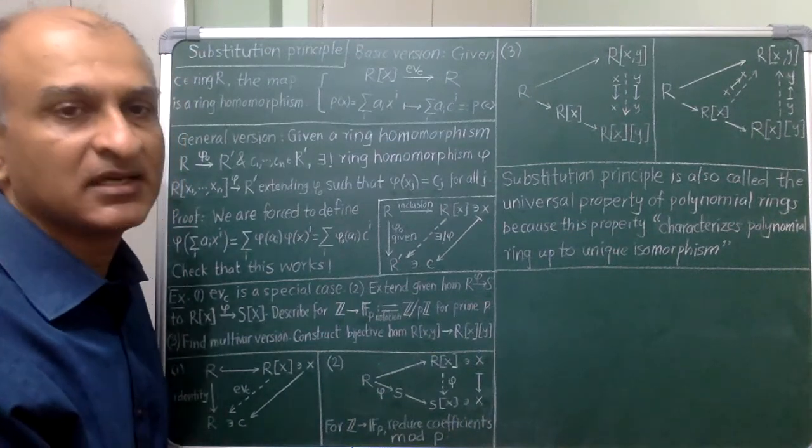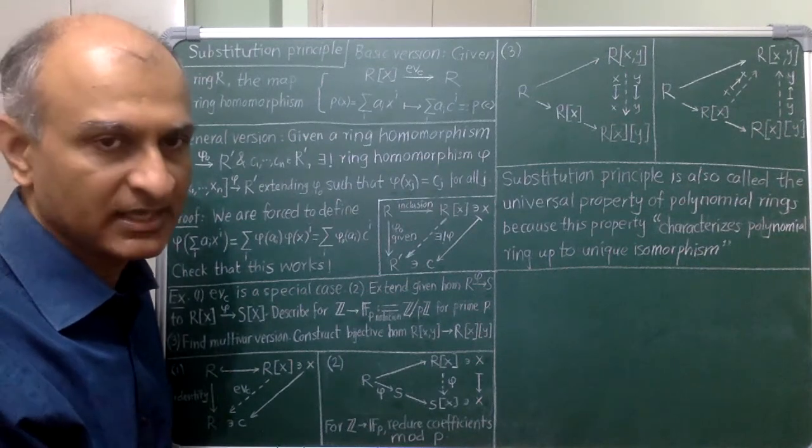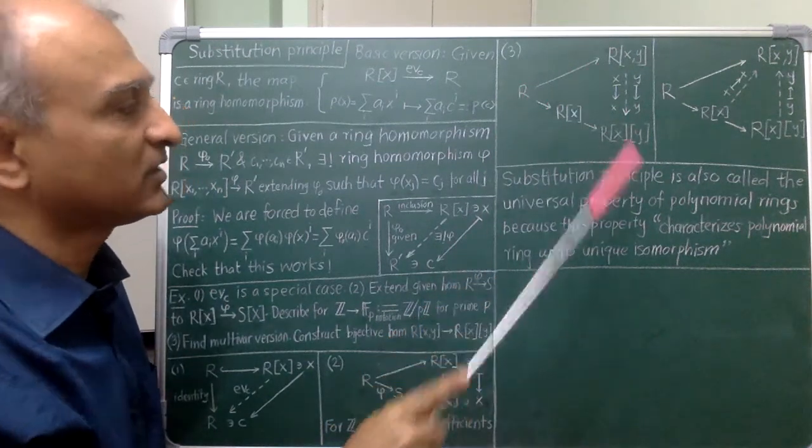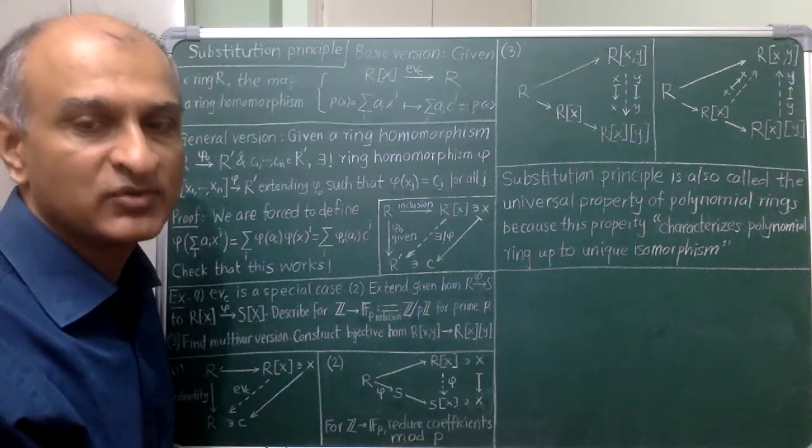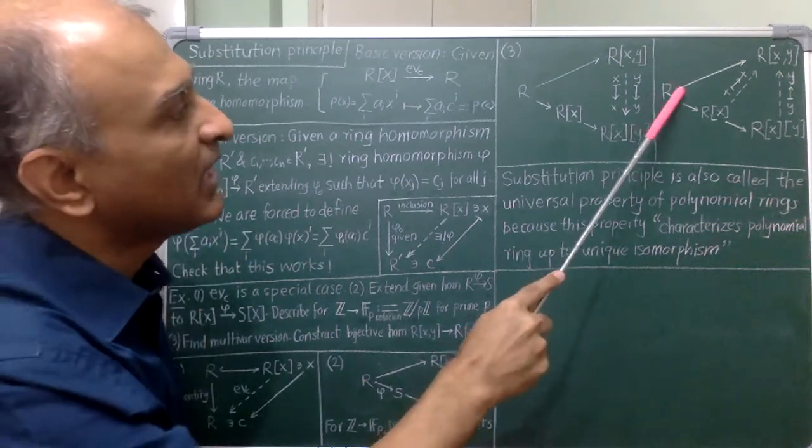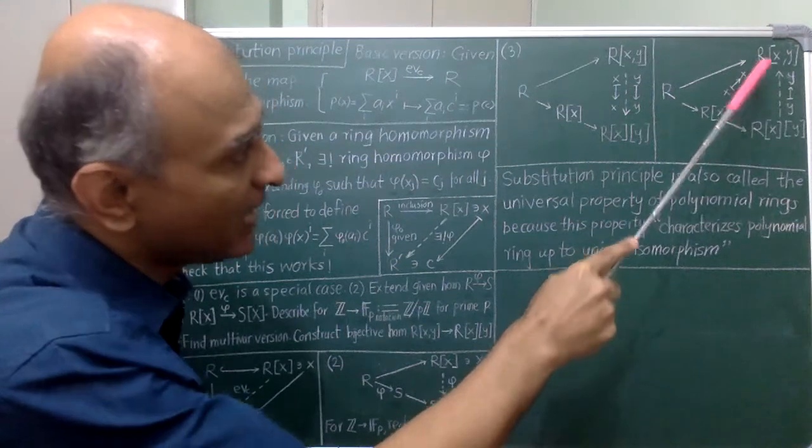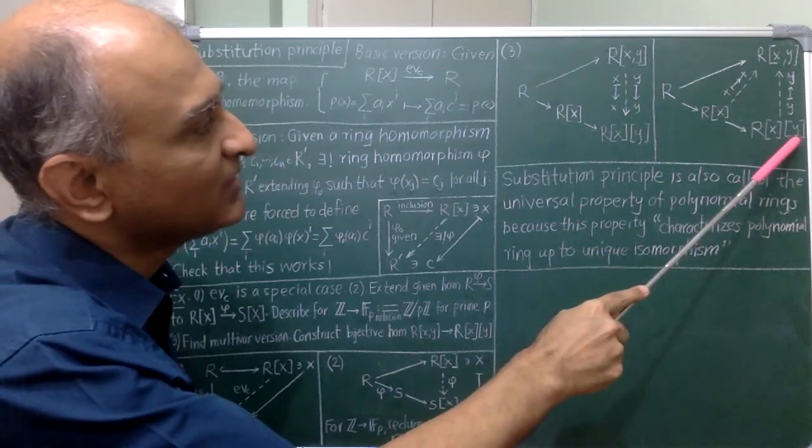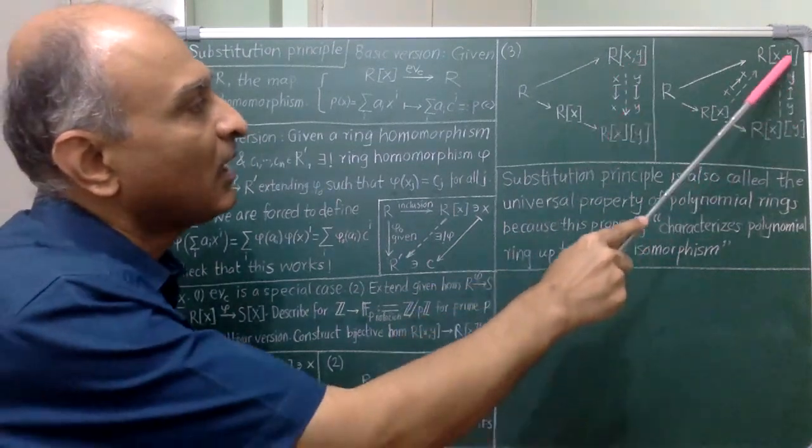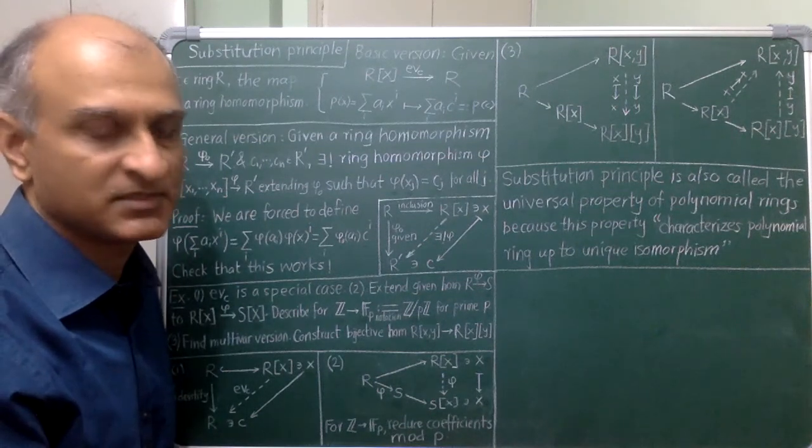Now, I can check by hand that this is a bijection but it is cleaner to do that by using the substitution principle once again. This time what I do is I try to extend this map to the bottom ring and I do that in two steps by using the substitution principle for the single variable case twice. First I extend this map to R[x] by sending x to x and then I extend this extended map to the bottom ring by sending y to y. Now, you can check that both of these vertical maps are inverses of each other. So, in particular they are bijective homomorphisms.